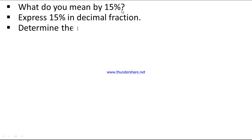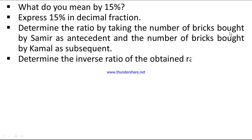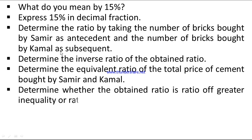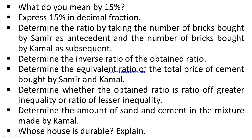At that time Kamal realized his mistake. The assignment questions are: (A) What do we mean by 15%? Express 15% as a decimal fraction. (B) Determine the ratio taking the number of bricks bought by Samir as antecedent and Kamal's bricks as subsequent, and determine the inverse ratio. (C) Determine the equivalent ratio of the total price of cement bought by Samir and Kamal, and determine whether it is a ratio of greater inequality or lesser inequality. (D) Determine the amount of sand and cement in the mixture used by Kamal whose house is durable. Explain.